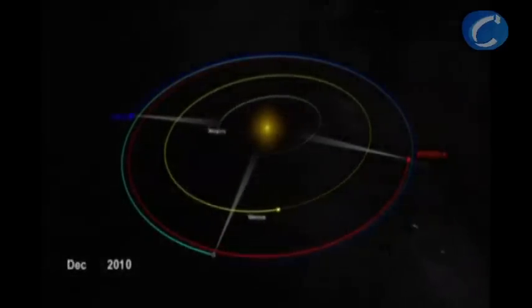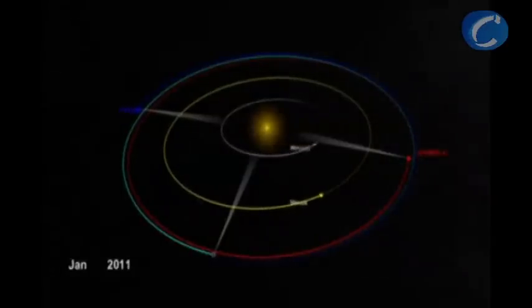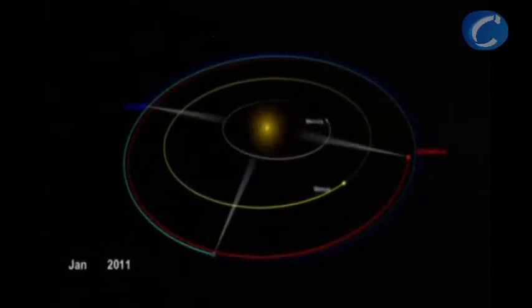Now STEREO A and B are almost exactly opposite each other, and for the first time in human history, we have a view of the entire Sun.